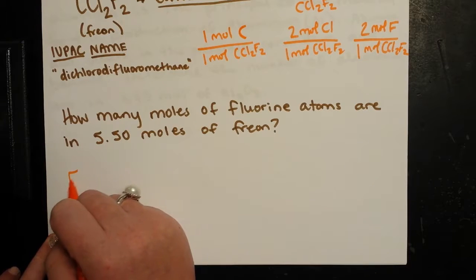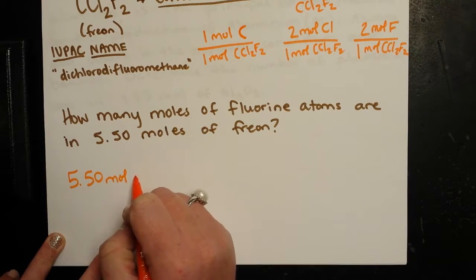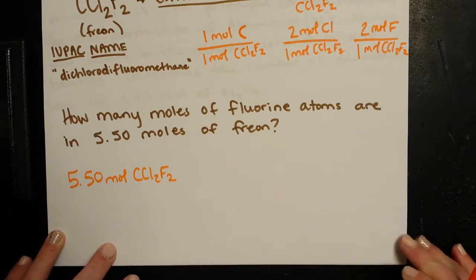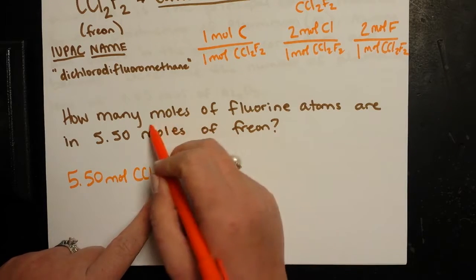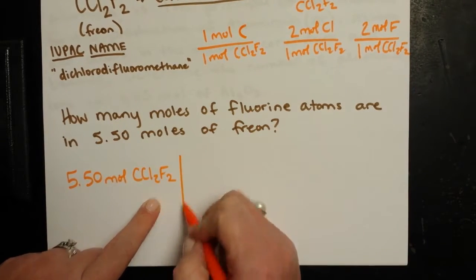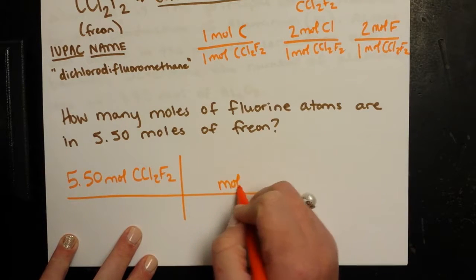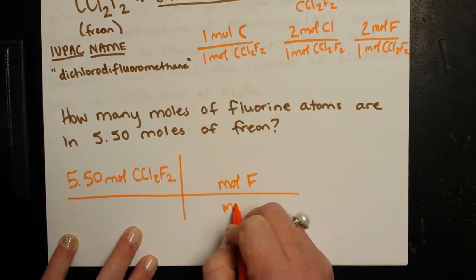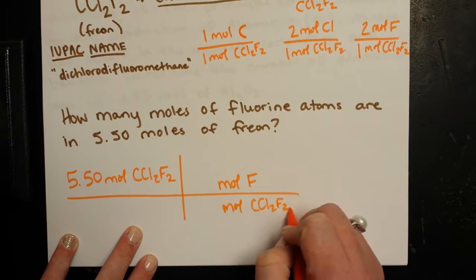So here I'm going to take what I know. I know that I've got 5.50 moles of Freon, so I'm going to write CCl2F2, dichlorodifluoromethane. And I want to get out of moles of Freon and into moles of Fluorine. So that means that I want moles of Fluorine on top and moles of Freon, so that way they cancel in my denominator, CCl2F2.